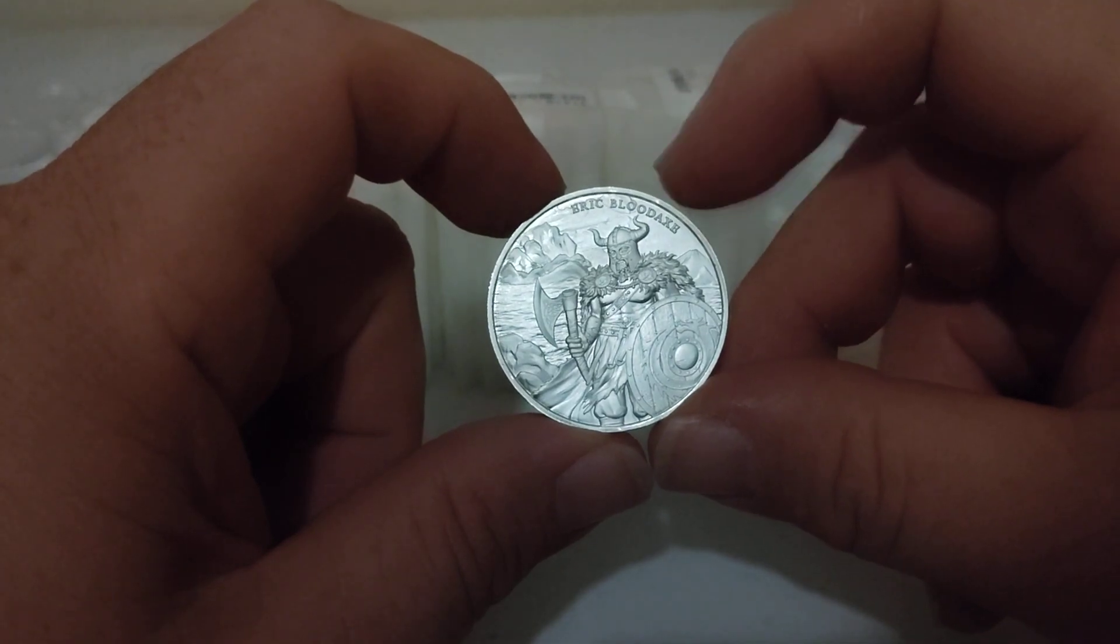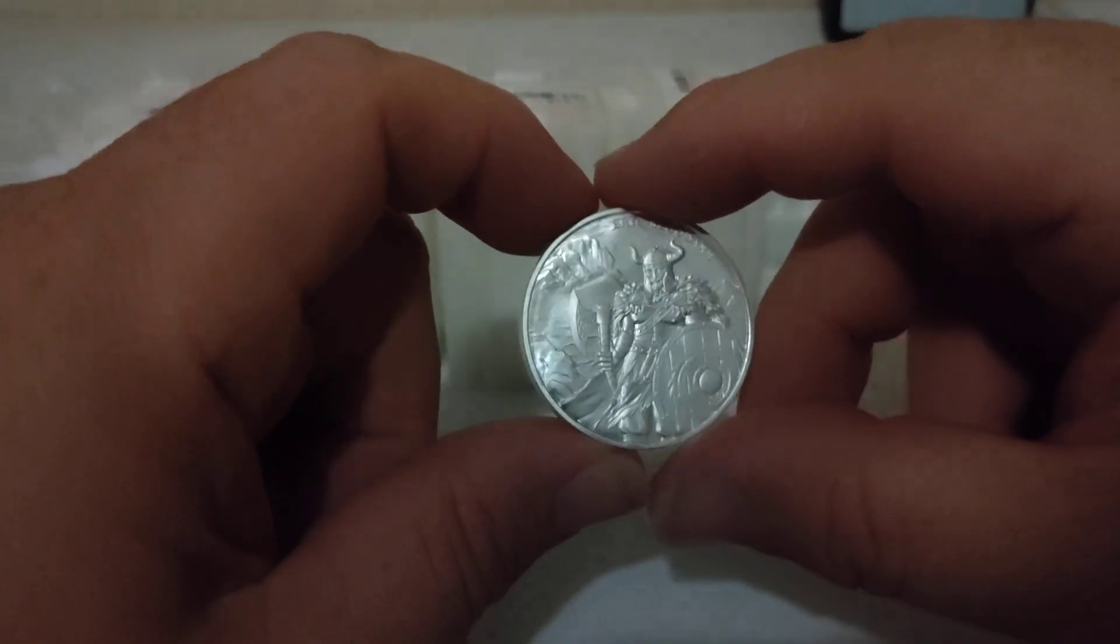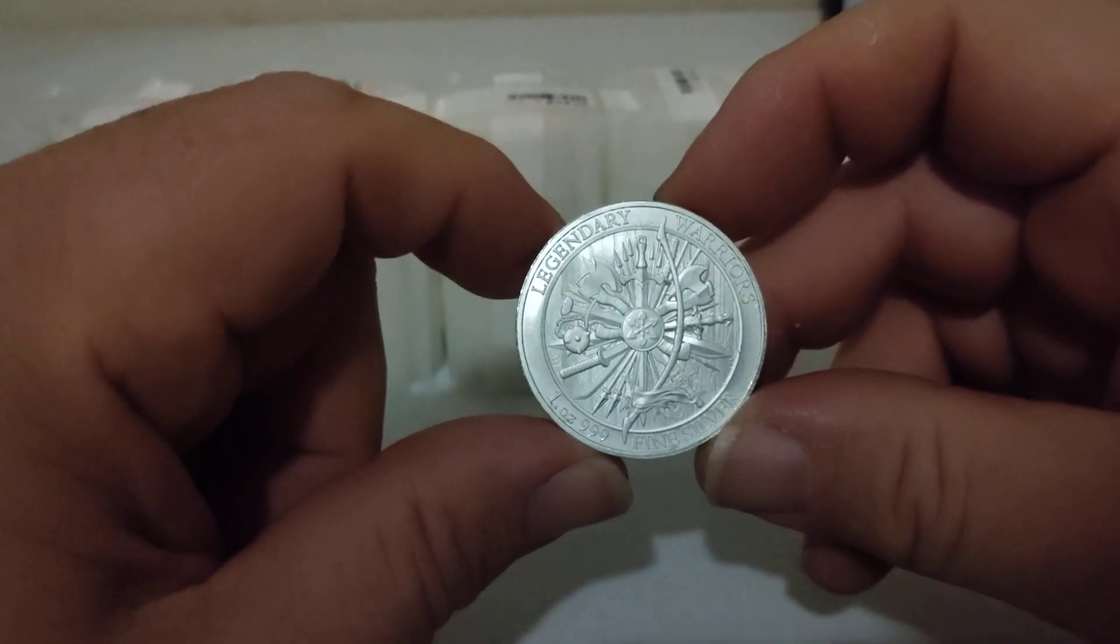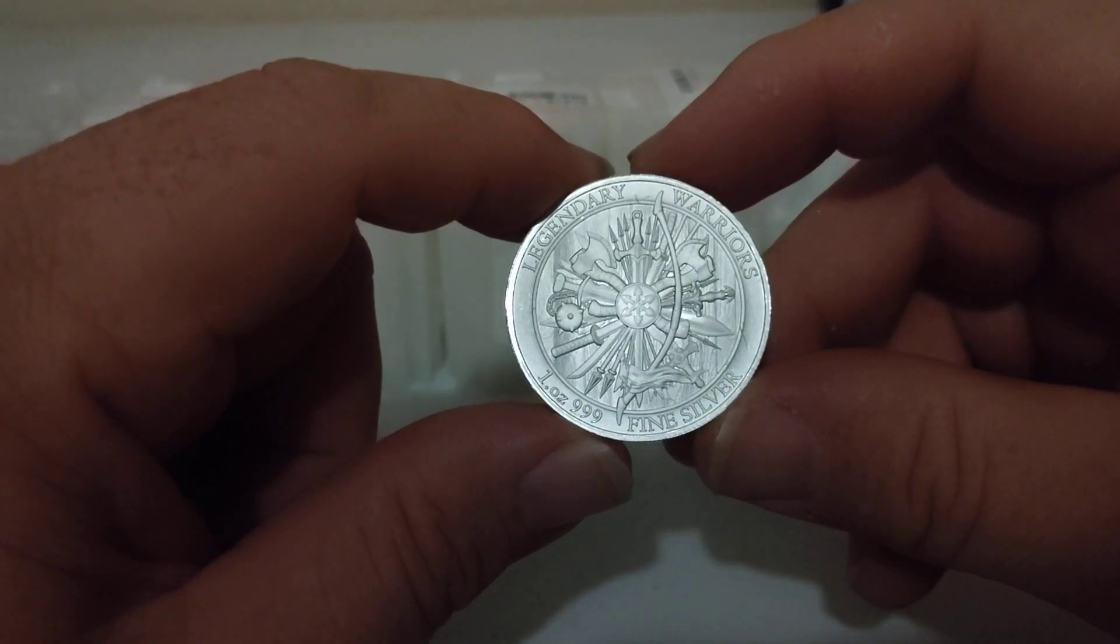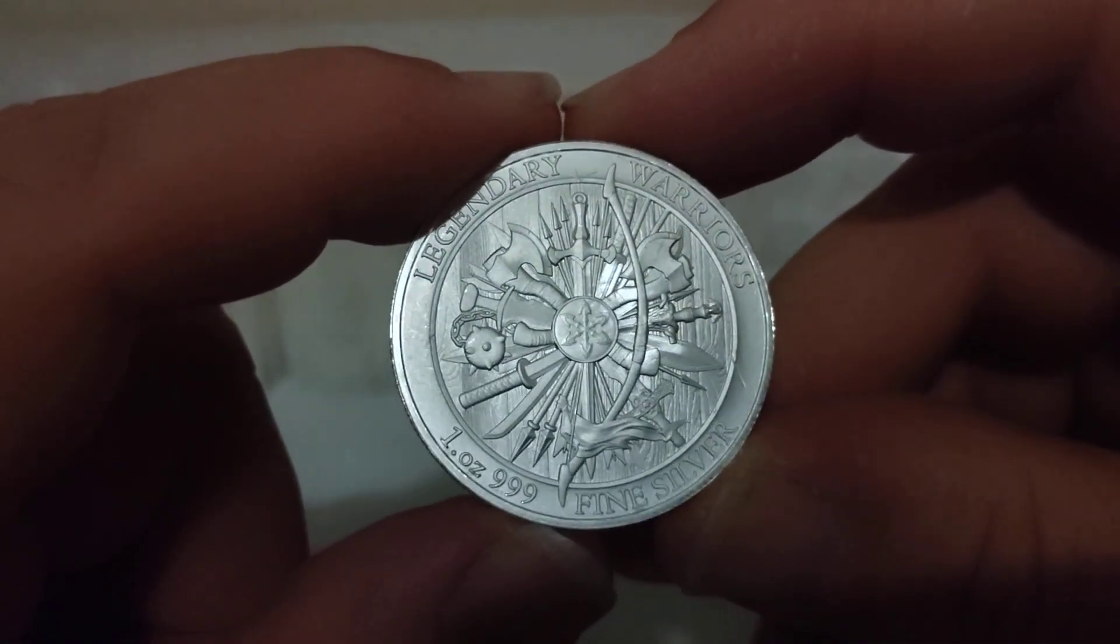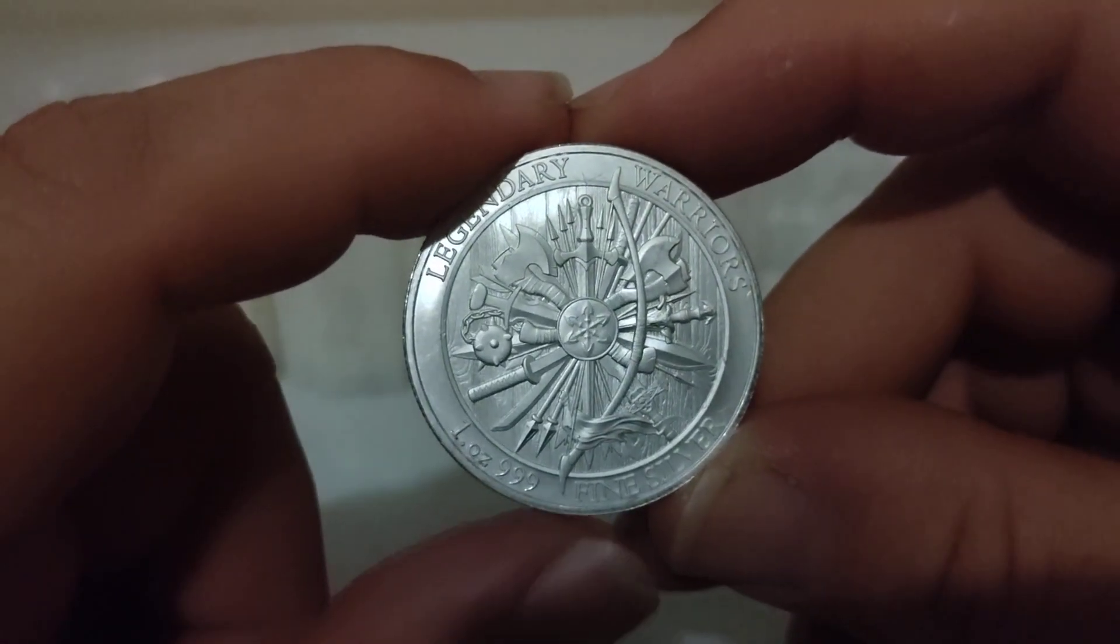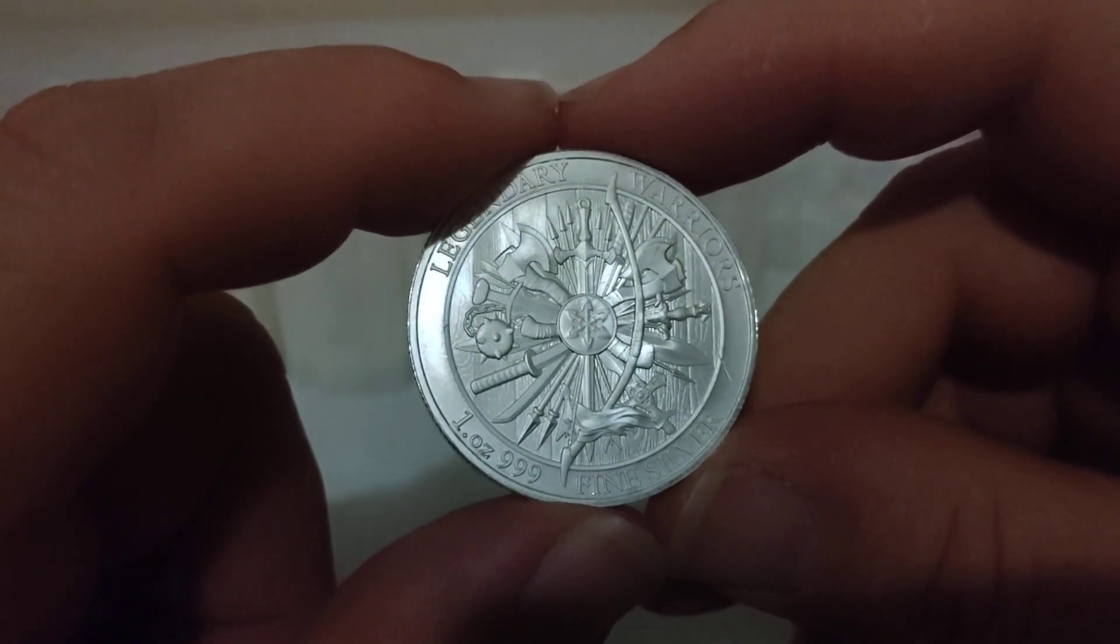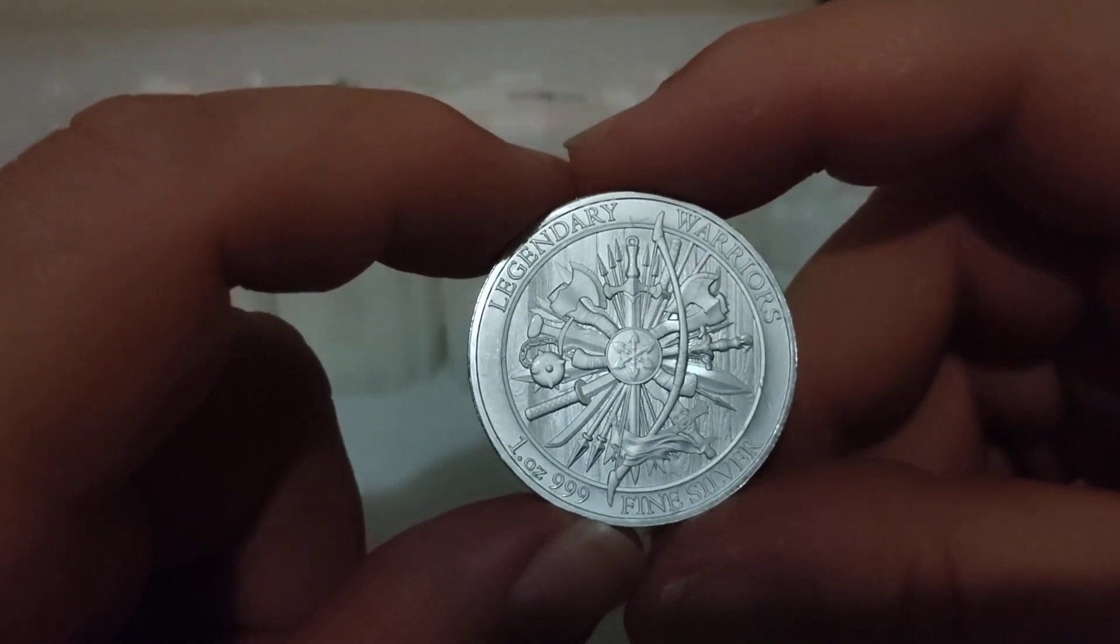I think as they start making more of these, they're going to have more people jump on this set, and it's going to be super popular now. So this is the front. When you turn the round around—that just sounds weird, the round around—it does have Legendary Warriors, one ounce, 999 fine silver. It's the same backing. It's basically a weapons design of all the different weapons that they use. Everything from bow and arrows to axes to swords to samurais, you name it. Knives, bow and arrow. Whatever the warrior used back in their time.